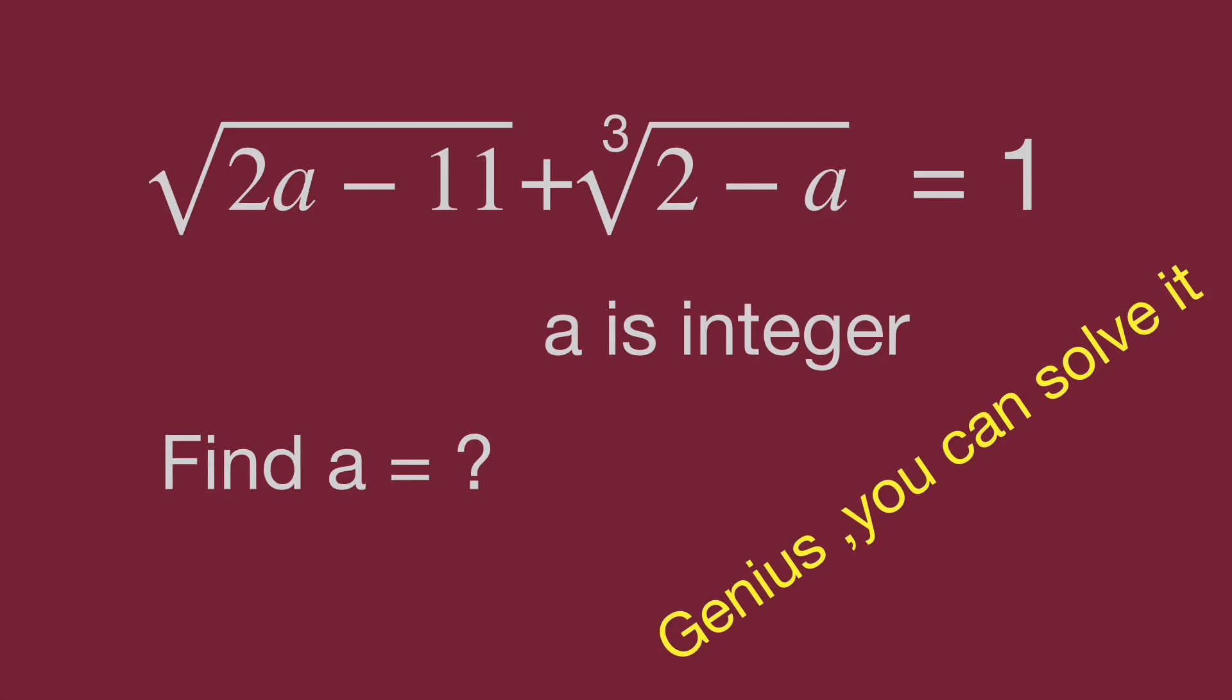The question: square root of 2a minus 11 plus cube root of 2 minus a equals 1. A is an integer. Find the value of A.